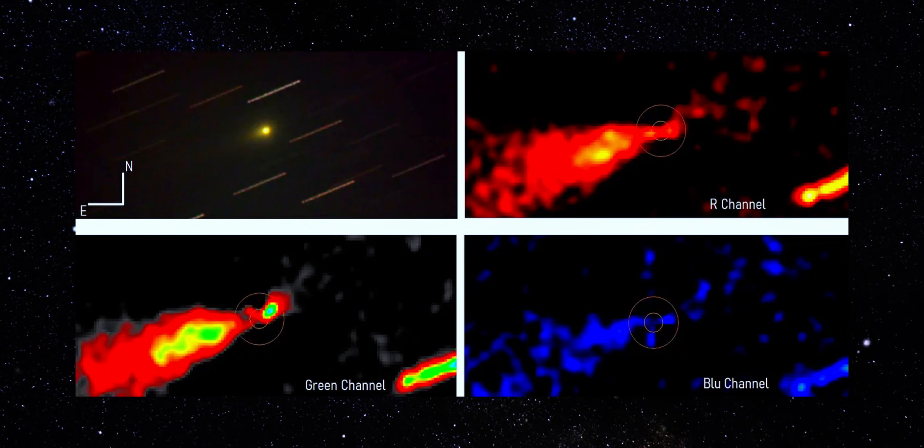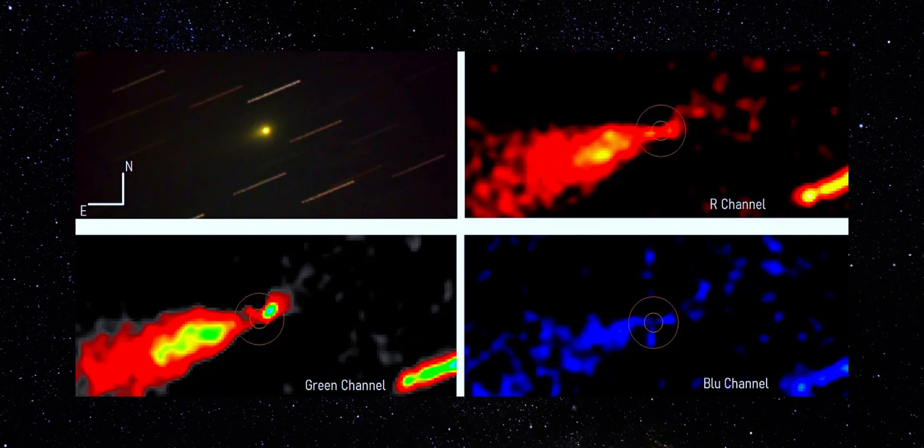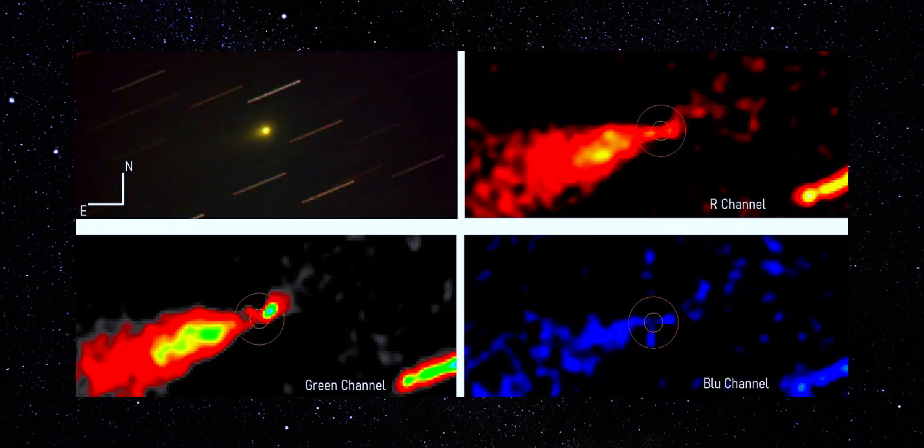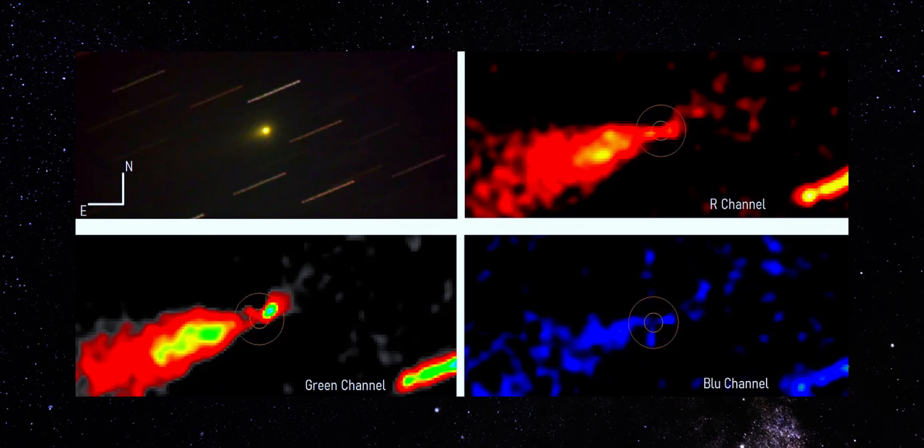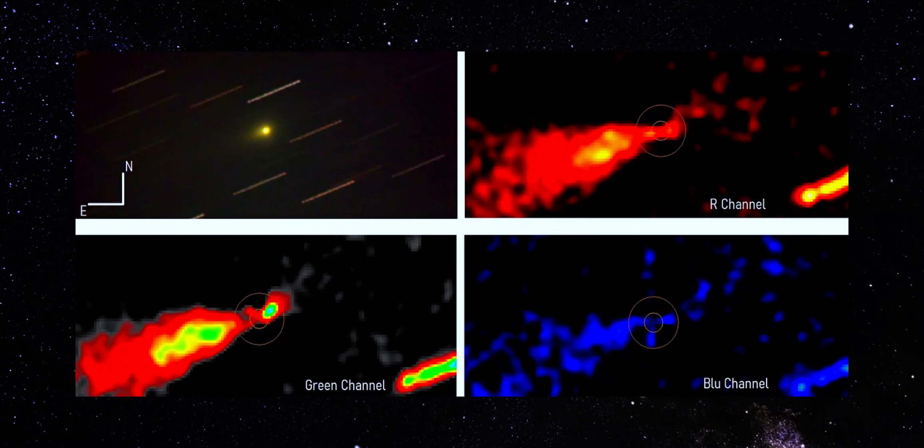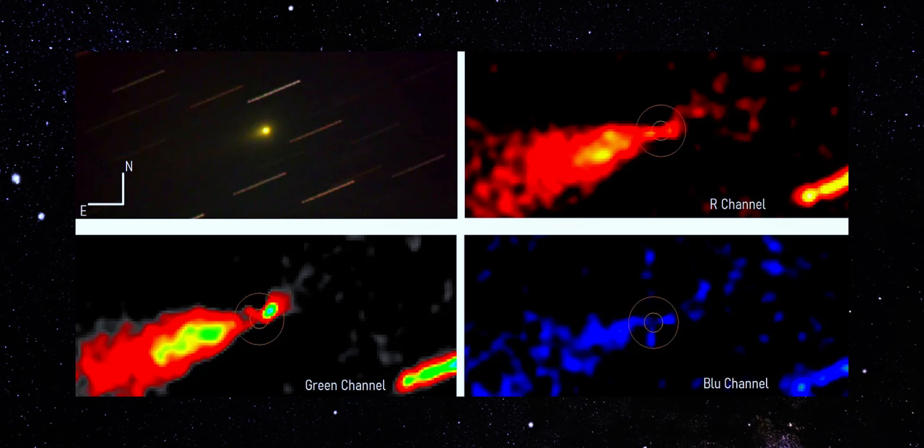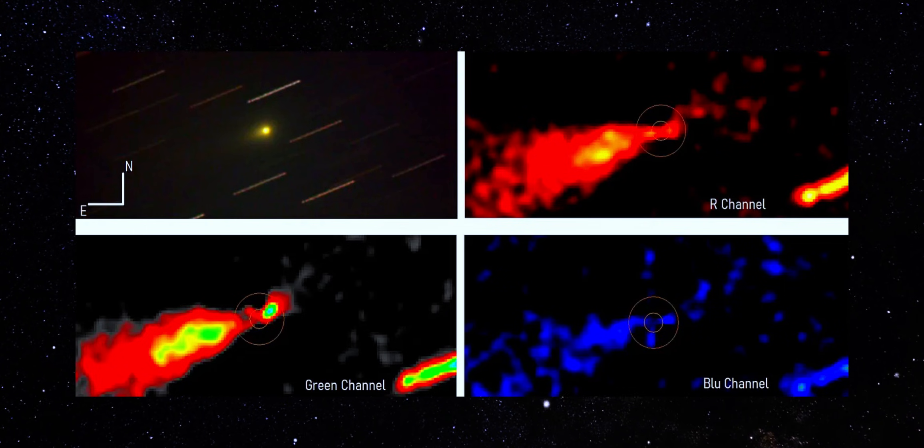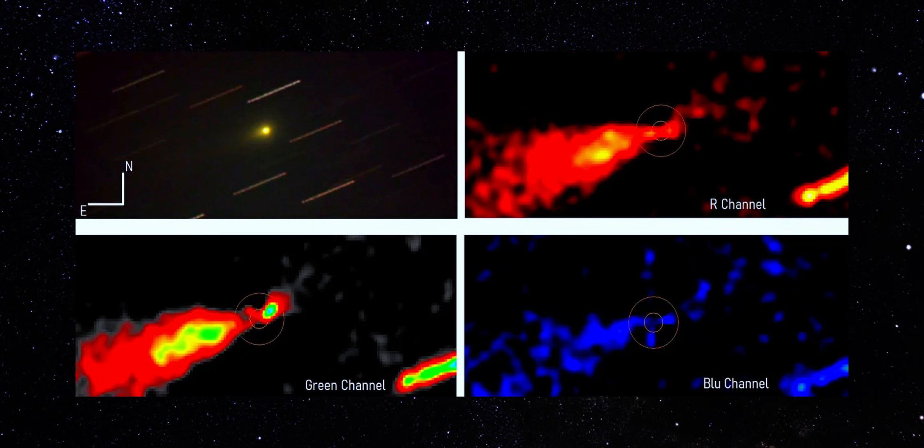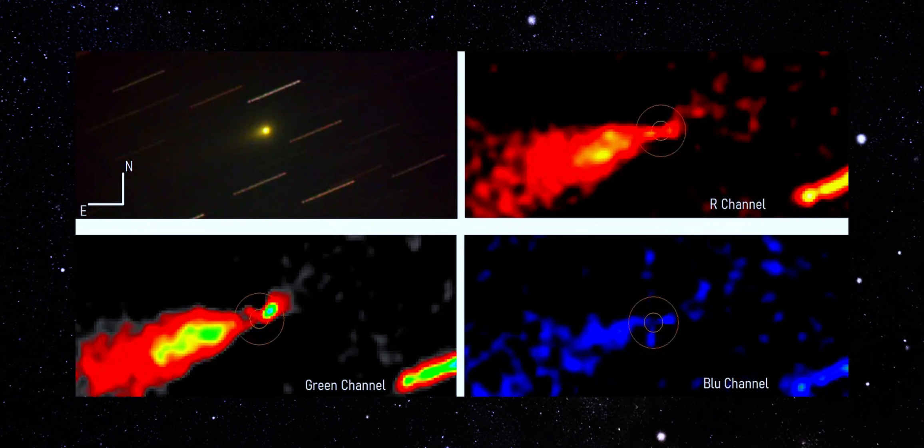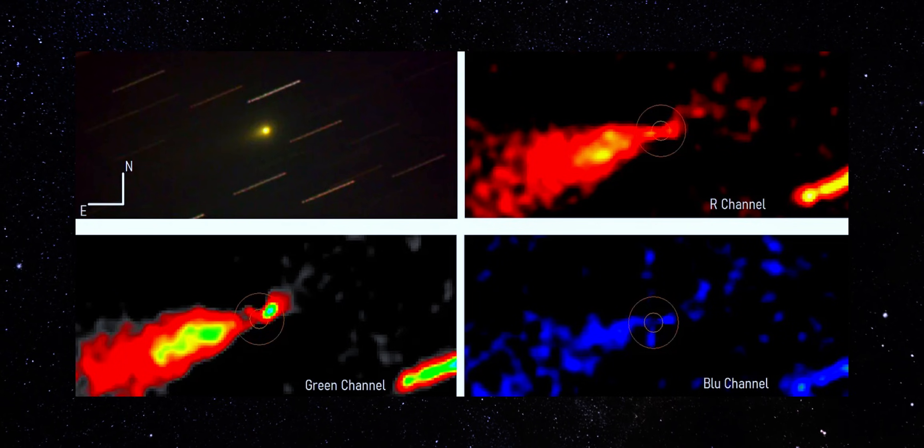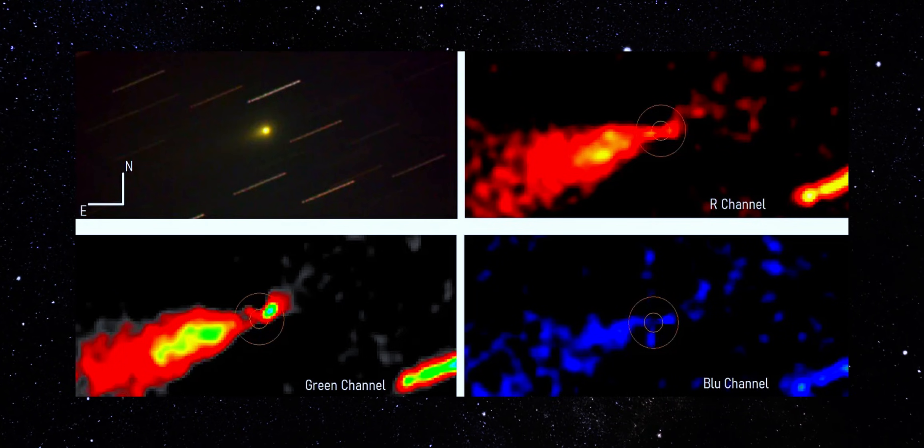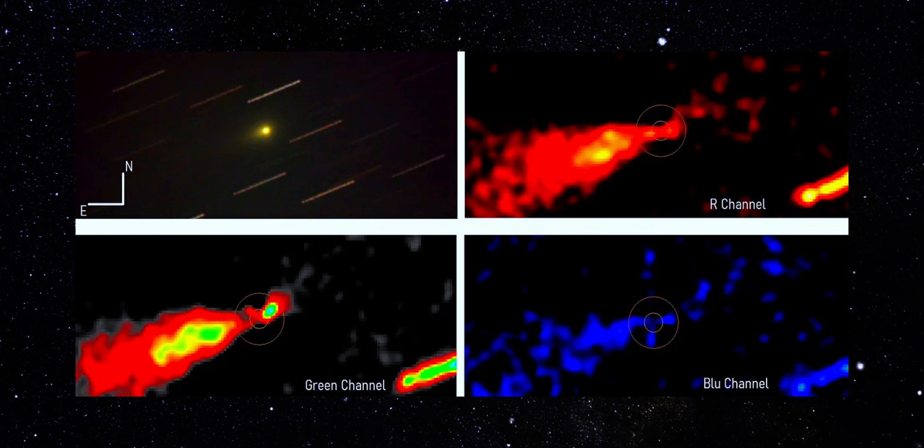This next image pushes the timeline much further. What you're seeing here comes from a three-hour time series run. 180 minutes of continuous tracking, not a single snapshot. Same object, much longer baseline. And the key detail isn't brightness. It's consistency.